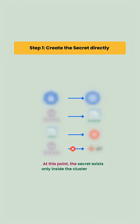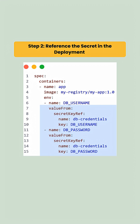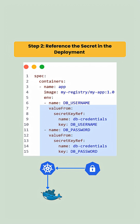Next we would reference the secret in the deployment yaml, where we don't put any credentials — we only reference the secret by name. Kubernetes pulls values from the secret and injects them into the container at runtime, so no secret appears in the port specification or git.